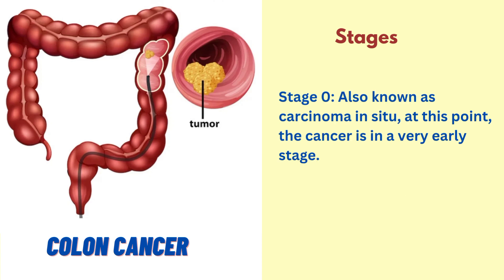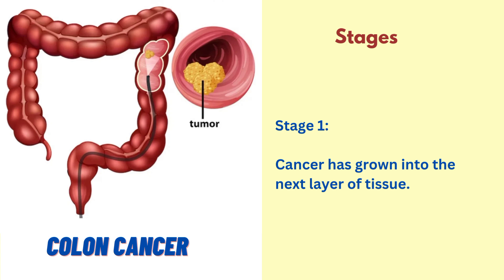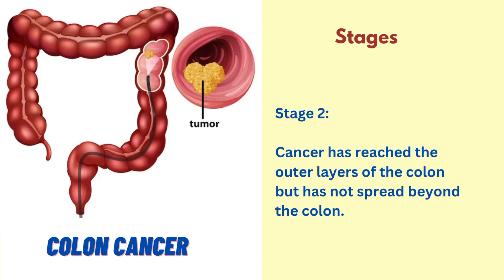Stage 0, also known as carcinoma in situ. At this point, the cancer is in a very early stage. It has not grown further than the inner layer of the colon and will usually be easy to treat. Stage 1, cancer has grown into the next layer of tissue. Stage 2, cancer has reached the outer layers of the colon but has not spread beyond the colon.